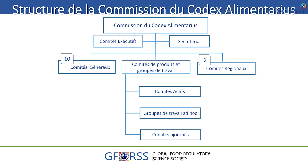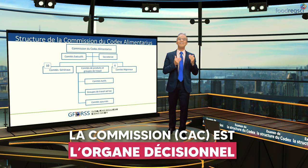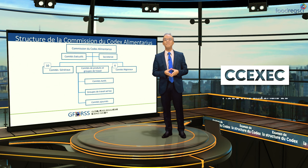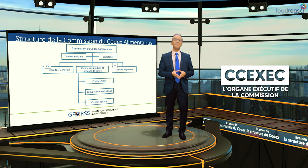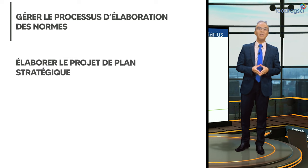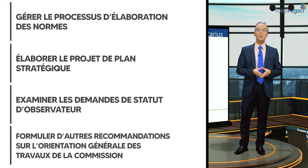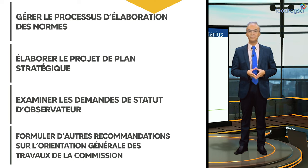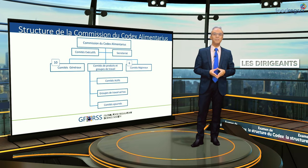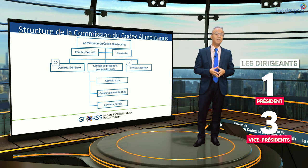Cette figure résume la structure des comités codex. Nous savons que la commission, donc la CAC, est l'organe décisionnel du programme conjoint FAO-OMS sur les normes alimentaires. Le comité exécutif de la commission, ou le CC-exec, agit en tant qu'organe exécutif de la commission. Il est chargé de gérer le processus d'élaboration des normes, d'élaborer le projet de plan stratégique, d'examiner les demandes de statut d'observateur et de formuler d'autres recommandations sur l'orientation générale des travaux de la commission. Les dirigeants comprennent un président et trois vice-présidents qui sont élus parmi les délégués des membres de la commission.